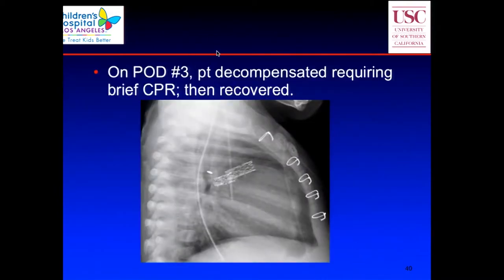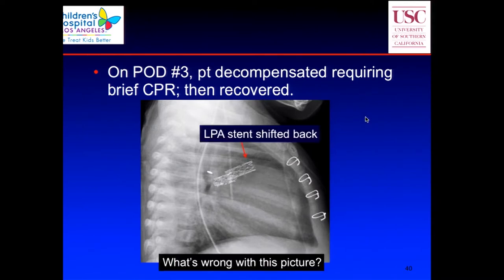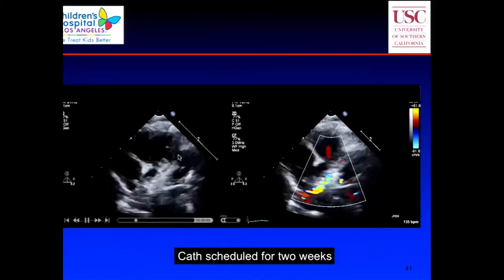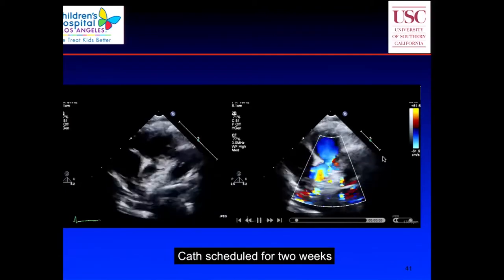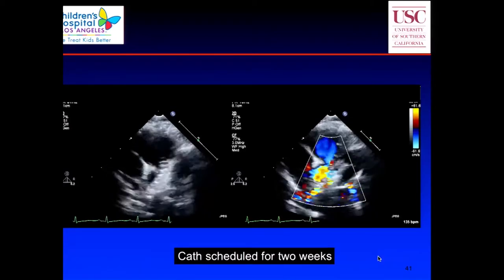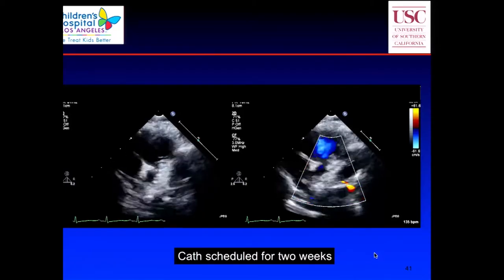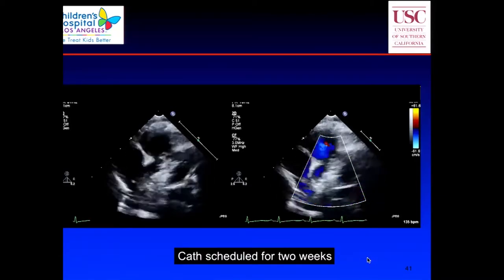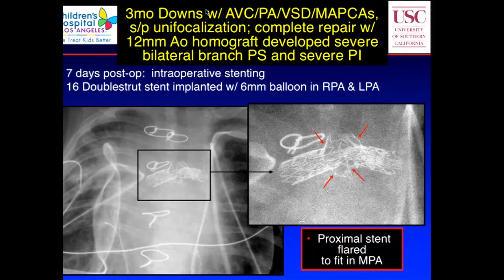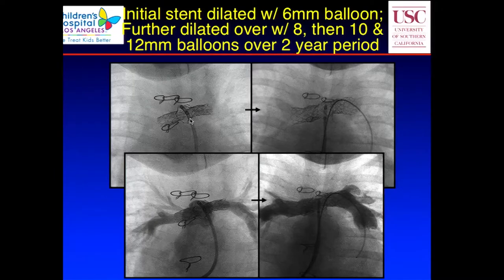The patient did well for three days, then had a decompensation event requiring CPR. The lateral X-ray showed the LPA stent had shifted back — further back than intended, though not touching the pulmonary valve. This is another consequence of not using a long sheath. This child is scheduled for the cath lab in two weeks to address this. The lesson: when doing a closed system, treat it exactly as if you're in the cath lab, with a long sheath protecting the stent when you withdraw the balloon. Additionally, one advantage of intraoperative stenting for kissing stents is that surgeons can flare the stent ends to create a single opening — something you can't do in the cath lab.